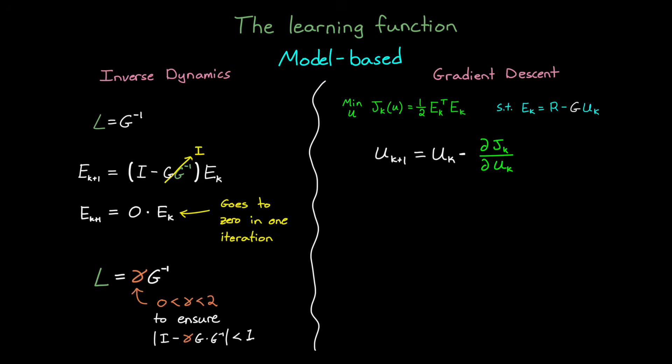Now if we go back, we can replace this negative gradient here that we're adjusting our input by. We can replace it with g transpose times e. And this means that our learning function l is just g transpose.